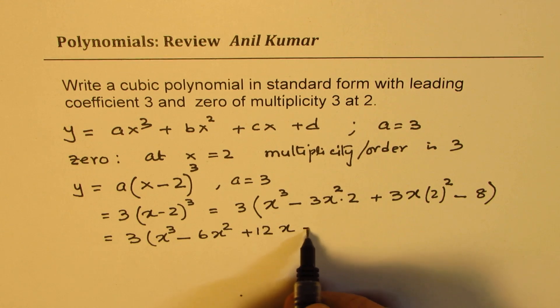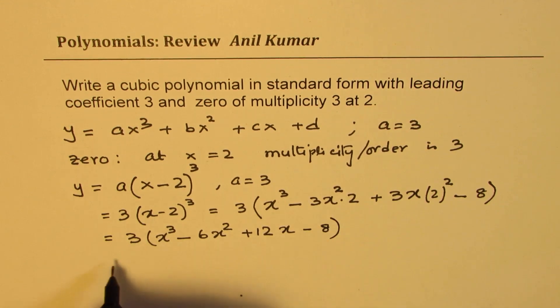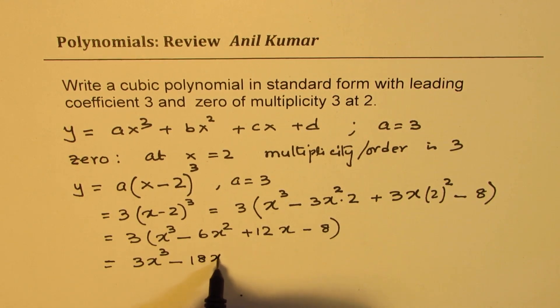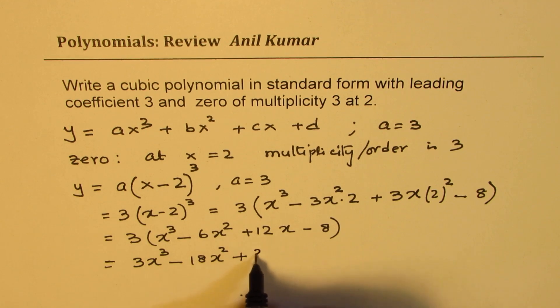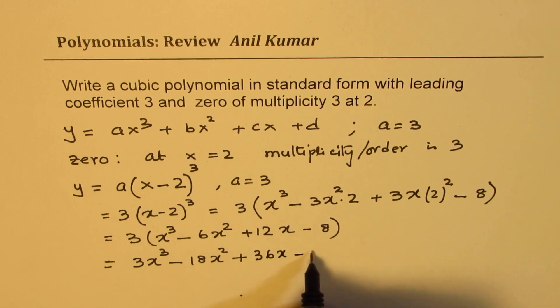We can multiply by 3 and write down the result as 3x³ - 18x² + 36x - 24. That is how you could do it.